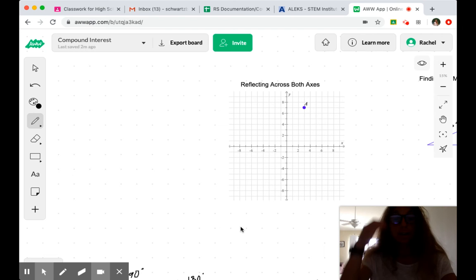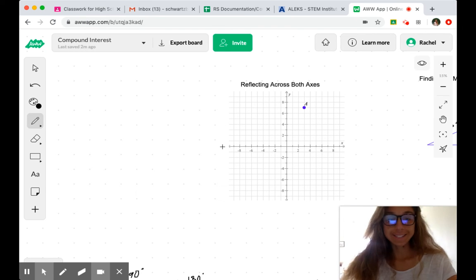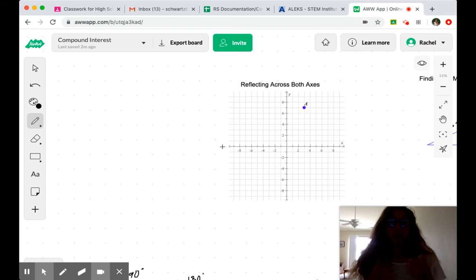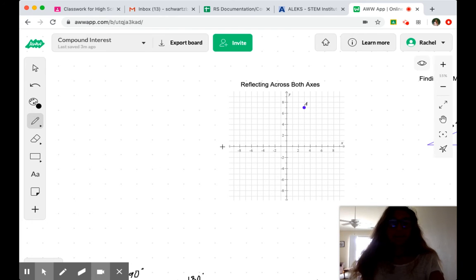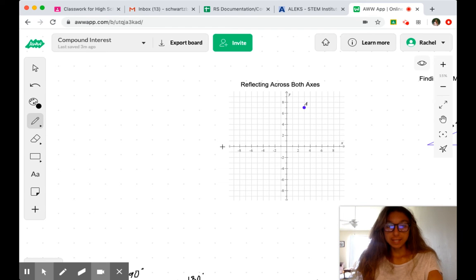We are going to be talking about reflecting a point over both axes in the coordinate plane. When we talk about the idea of a reflection, think about standing in front of a mirror. The distance between you and the mirror is demonstrated in that image that you see.